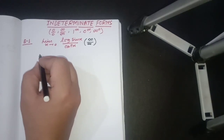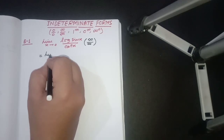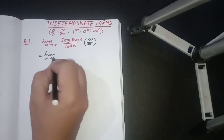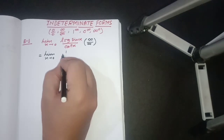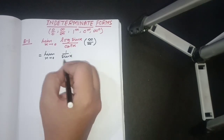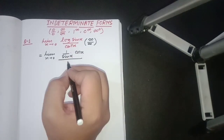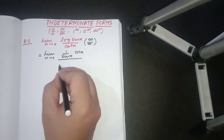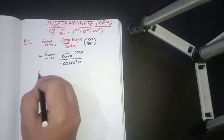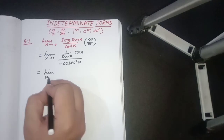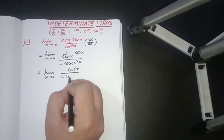So we have to solve it. It is equal to the limit as x tends to 0. The differentiation of log(sin x) will come out as 1 upon sin x, and sin x will again be differentiated, giving cos x. Similarly, the differentiation of cot x is equal to minus csc²x. So it will come out as the limit x tends to 0 of cot x upon minus csc²x.